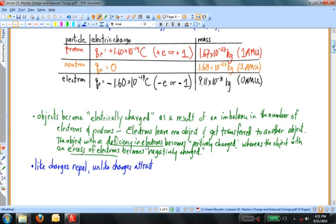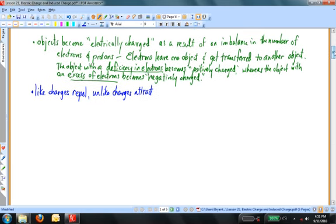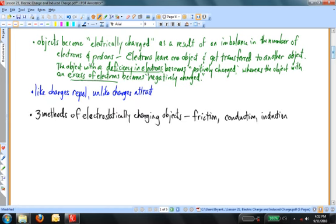Another important fact is that there are three main methods of charging objects electrostatically. Those three methods are charging by friction, charging by conduction, and charging by induction. Let's remind ourselves of what each of these methods means. In fact, we're going to dedicate the second part of this lesson to induction.